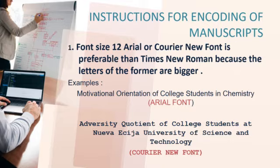Here are the instructions for encoding of manuscripts. First, font size 12 Arial or Courier-New font is preferable over Times New Roman because the letters of the former are bigger. We have here an example. As you can see, the title for the research is written in Arial font: 'Motivational Orientation of College Students in Chemistry.' The second example is written in Courier-New font: 'Adversity Quotient of College Students at Nueva Ecija University of Science and Technology.'